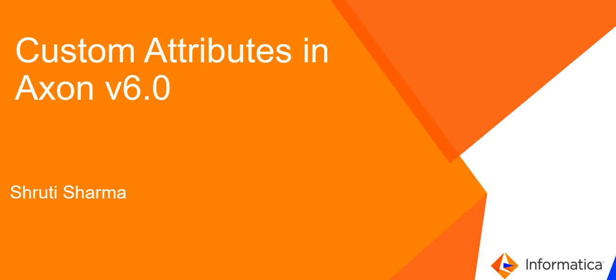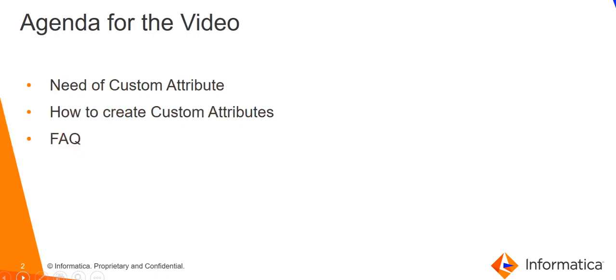Hello everyone, welcome to the Informatica support video. This is Shruti from Informatica GCS. Today we are going to discuss the feature of custom attributes, which was introduced in Axon version 6.2. Before starting, let's see the agenda: we will discuss the need for custom attributes, how to create them in Axon, and then some frequently asked questions.